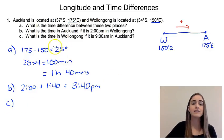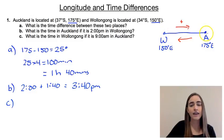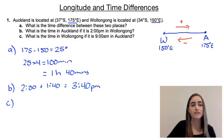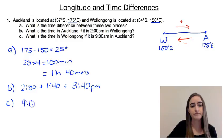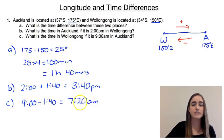Part C asks: what is the time in Wollongong if it's 9am in Auckland? Because Wollongong gets the day later, it's going to be earlier in Wollongong. So we subtract that one hour and 40 minutes: 9am minus one hour and 40 minutes gives us 7:20am. So when it's 9am in Auckland, it's only 7:20am in Wollongong.